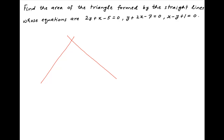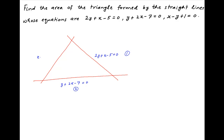We are given three straight lines that form a triangle. The equation of the first line is 2y plus x minus 5 is equal to 0 — let's denote it by L1. The second line is y plus 2x minus 7 is equal to 0 — let's denote it by L2. And the third line is x minus y plus 1 is equal to 0 — let's denote it by L3.